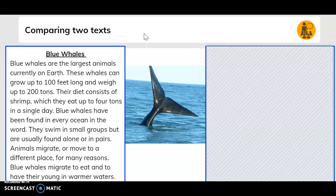Blue whales have been found in every ocean in the world. They swim in small groups but are usually found alone or in pairs. Animals migrate or move to a different place for many reasons. Blue whales migrate to eat and to have their young in warmer waters.